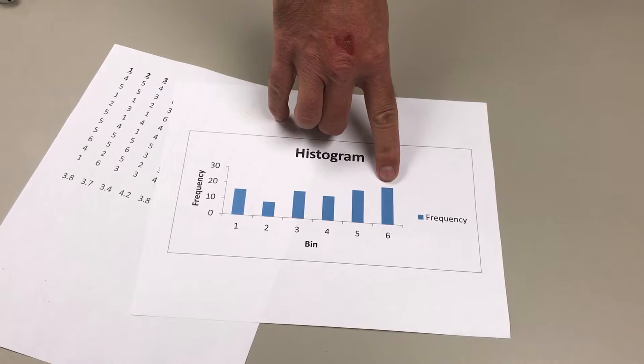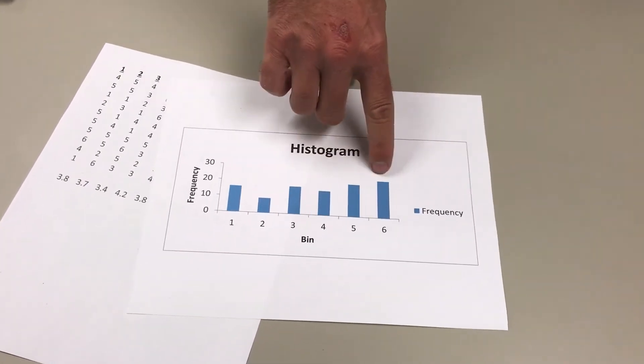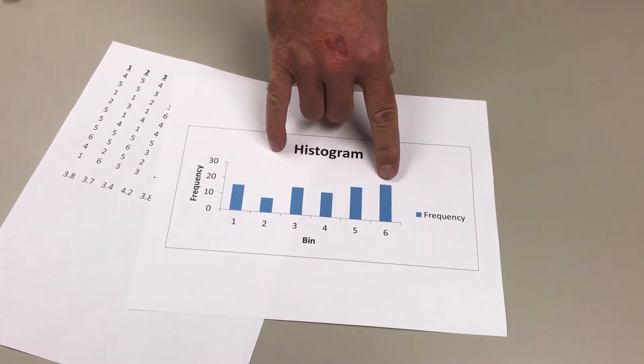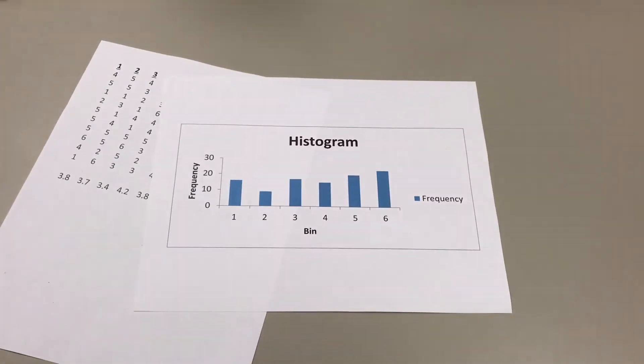And what you'll notice is kind of interesting that they don't match very well. Some are very small, some are very big. This is called clumping, and that occurs randomly.